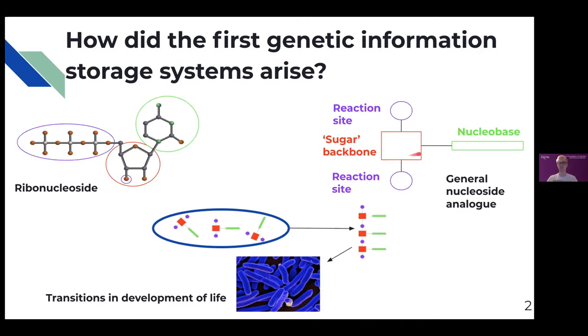These nucleoside analogues, a general example of which is shown here on the right, all have the same basic structure: a sugar backbone with two reaction sites where they can react with other nucleosides in order to polymerize, and a site where they can react with a nucleobase, one of ATGC or AUGC we're all familiar with as the building blocks of the universal genetic code. So the question to consider is: are alternative nucleoside analogues more promising as candidates for the basis of the first self-replicating systems than ribonucleosides and RNA because of their simpler or more robust prebiotic synthesis?